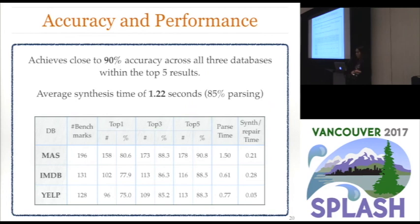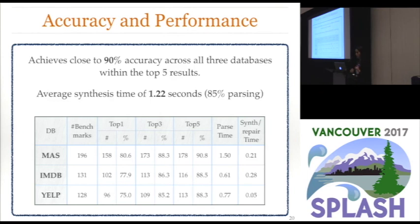This table gives a quick summary of our results. If we define success as the intended query being ranked within the top five, our tool SQLizer achieves close to 90% accuracy across all three databases. With a stricter definition of top three, accuracy drops but is still around 86% on average. For top one, accuracy ranges around 81%, which is still significantly better than our closest competitor, Nullier. The synthesis time is also quite reasonable — SQLizer takes an average of 1.2 seconds, with 85% of that time spent on semantic parsing.